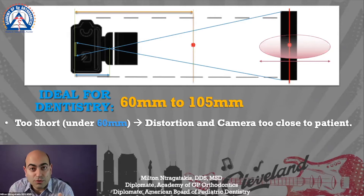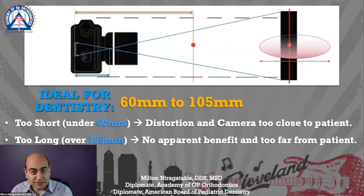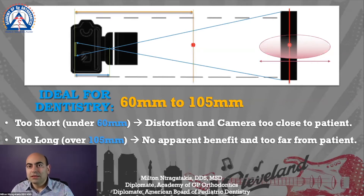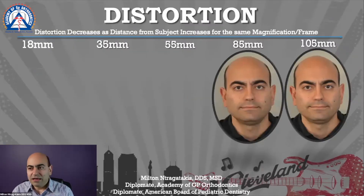If you are too long — over 105 — there is no apparent benefit, and now you have to pull back because your lens is zoomed too much. So just keep in mind that the millimeter indicates the focal length, and you want to be between 60 and 100. At 105 and 85 there was minimal difference.